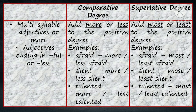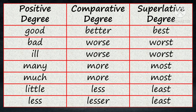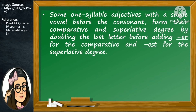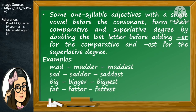And for our last example, talented becomes more talented and most talented, or less talented and least talented. Some one-syllable adjectives with a single vowel before the consonant form their comparative and superlative degree by doubling the last letter before adding -er for comparative and -est for superlative. For example, mad becomes madder and maddest. Sad becomes sadder and saddest. Big becomes bigger and biggest. And fat becomes fatter and fattest.